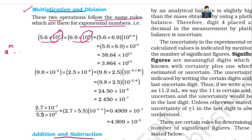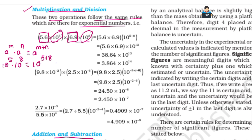For multiplication, both operations follow the same rules for exponential numbers. The rule is: A^M × A^N = A^(M+N). For example, 10^5 × 10^8 = 10^(5+8) = 10^13.